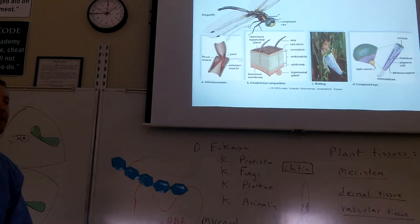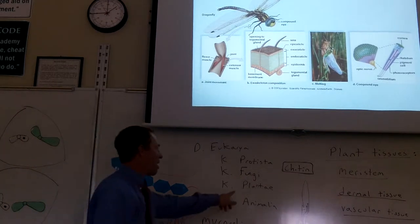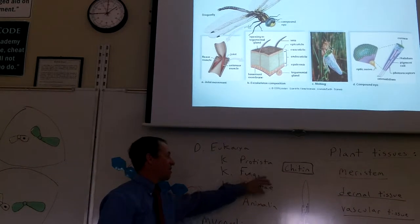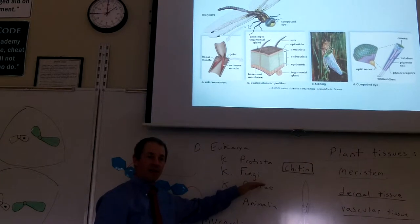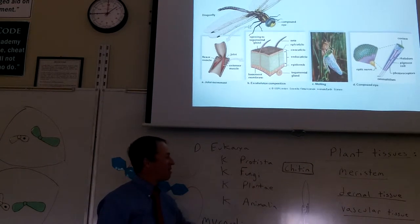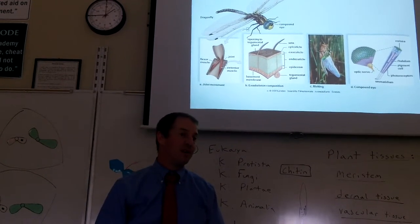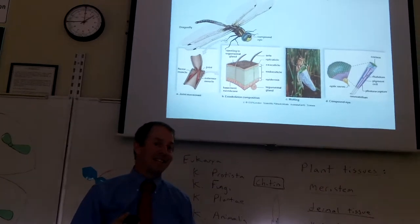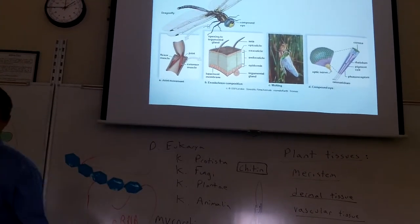Compound eyes do not make out detail as well as our eyes do, though. For instance, a compound eye couldn't read these letters. They would just see kind of a dark here. Compound eyes can't make out detail as well. They are much better, though, at seeing movement. So they can detect just the slightest movement. And that serves these organisms pretty well.